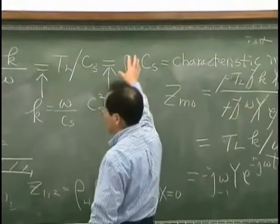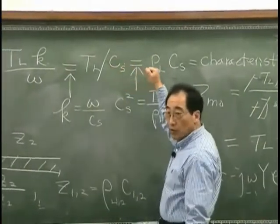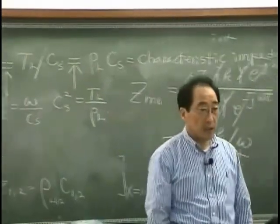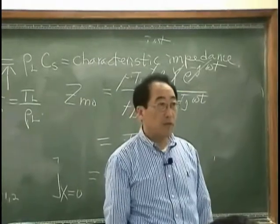What if this impedance has only real part but different with the ρLC? Then we might have some reflection.